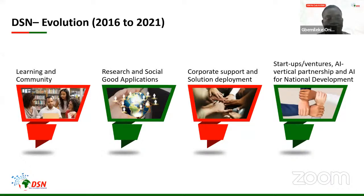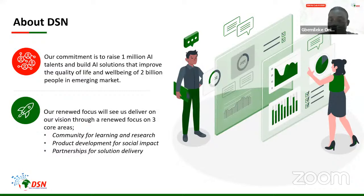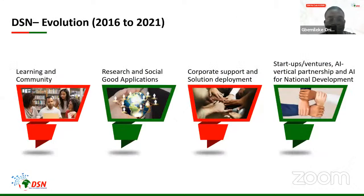For those of you that know who DSN is — before, we had a vision committed to raising 1 million AI talent. But over time our vision has evolved to include creating a community for learning and research. We've also gone into product development for social impact, and we are focusing on partnership for solution delivery — reaching out to people within the community, the tech space, and the market space to create a system that works for everyone. These evolutions have helped us grow in learning, community, research, and social good applications.